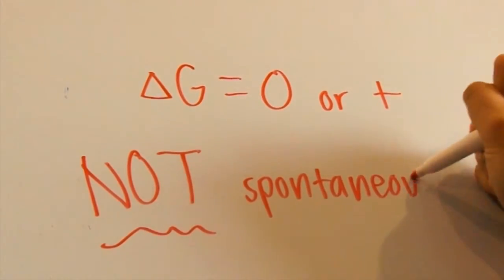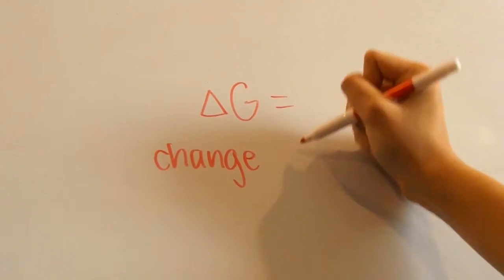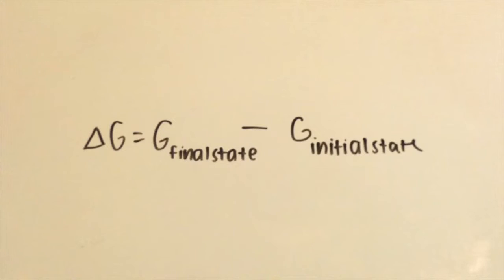On the other hand, you can also think of the change in free energy as the change before and after the reaction. Here's another equation that you can use. Delta G equals G sub final state minus G sub initial state. In order to make this negative, you would have to have a larger amount of energy in the initial state than the final state.